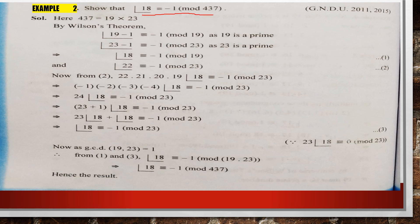Another very important example: show that 18! ≡ -1 (mod 437). In this type of problem, you have to split the modulus into prime numbers. We know that the factors of 437 are 19 × 23. So here we have two prime numbers: 19 and 23. We will apply Wilson's theorem for each of these two prime numbers. Wilson's theorem states: (p-1)! ≡ -1 (mod p).